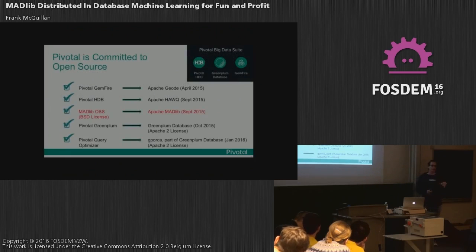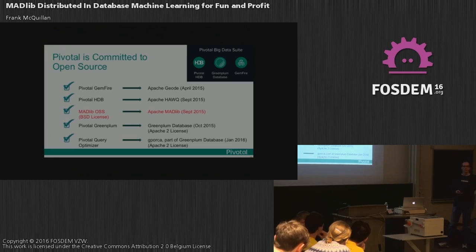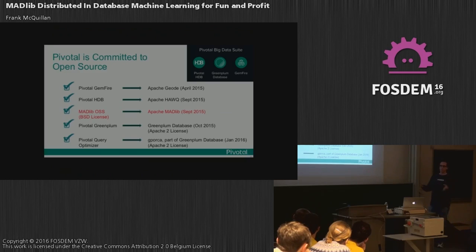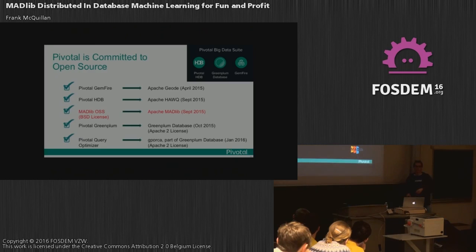Pivotal has taken that to heart, and effectively all of the commercial products developed through Greenplum — including Greenplum Database and the SQL-on-Hadoop product — have all been open-sourced in the last year or so, including Madlib.